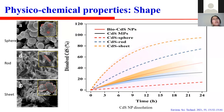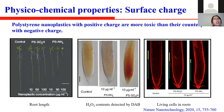The biological reactivity of nanoparticles also depends on particle surface charge. Positively charged nanoparticles had a stronger effect on root and seedling development, as well as on root elongation. This could be attributed to the electrostatic attraction between positively charged nanoplastics and the negatively charged root surface.